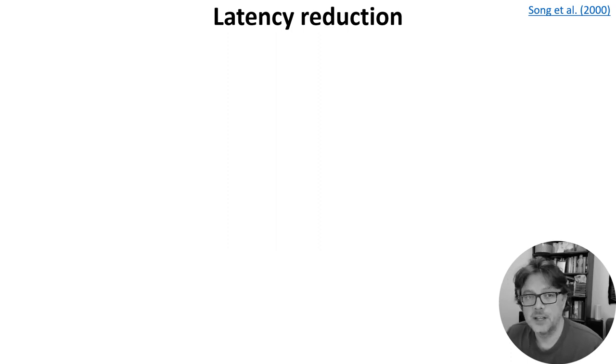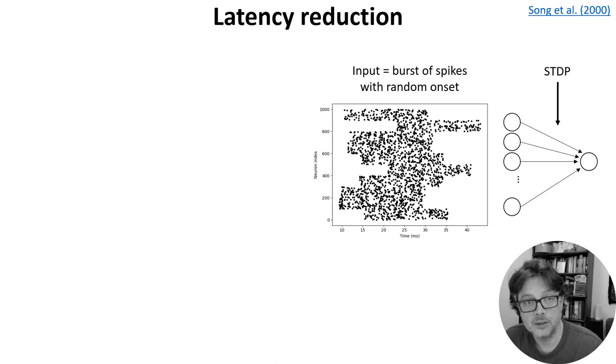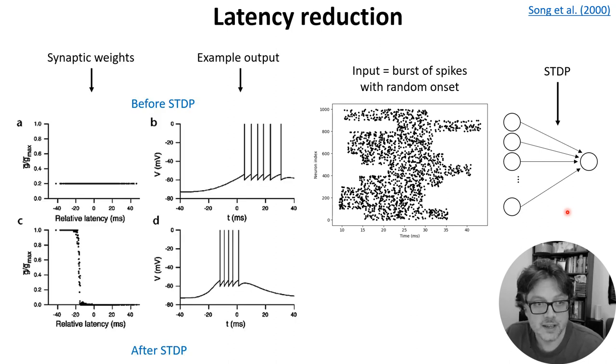Now that we know how to model STDP, let's start looking at some of the things we can learn. So we'll set up a model with a layer of input neurons connected to a single output neuron with STDP on the synaptic weights. Now we make those input neurons all fire a burst of spikes for 20 milliseconds, but with a random latency. And look at what the network learns. What we see is that the neurons with a low latency have their synaptic weights strengthened to the maximum level. So here, this is before all of the latencies have the same weight. Afterwards, the low latency neurons have a high weight and the high latency neurons have a low weight.